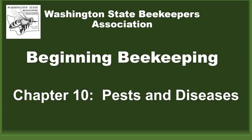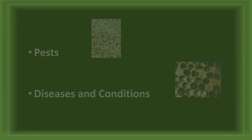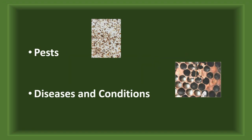Welcome to Chapter 10 of the Washington State Beekeepers Association Beginning Beekeeping Certification Training, where we will look at pests and diseases. We will cover two sections in this chapter: pests, and then diseases and conditions.